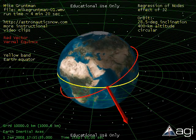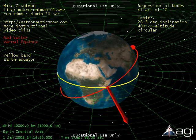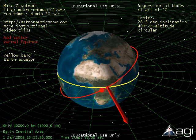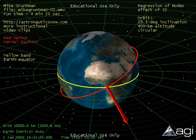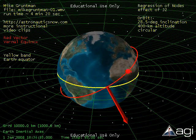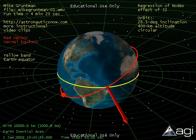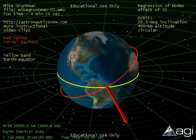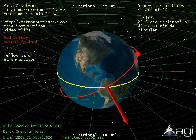This video clip demonstrates precession of the satellite orbital plane caused by nonzero J2. The simulation covers five days. The orbit in this example is circular with altitude 400 kilometers and inclination 28 degrees.